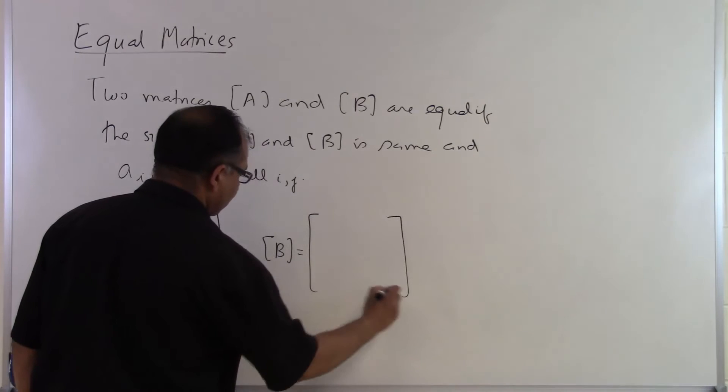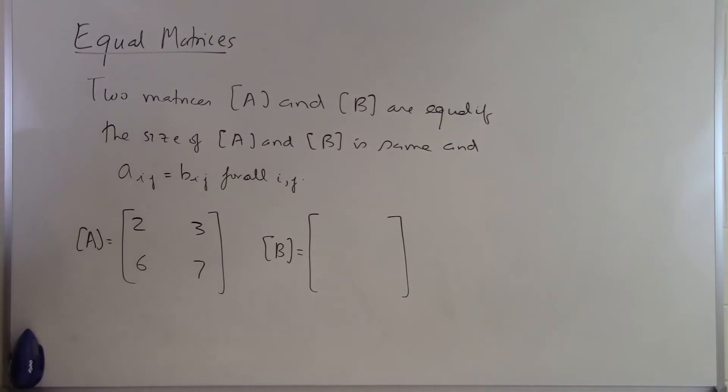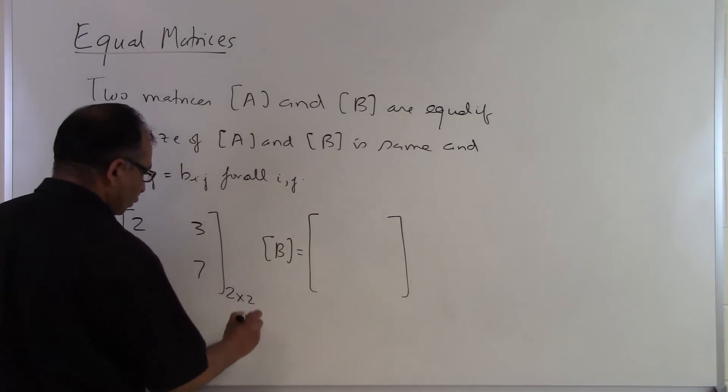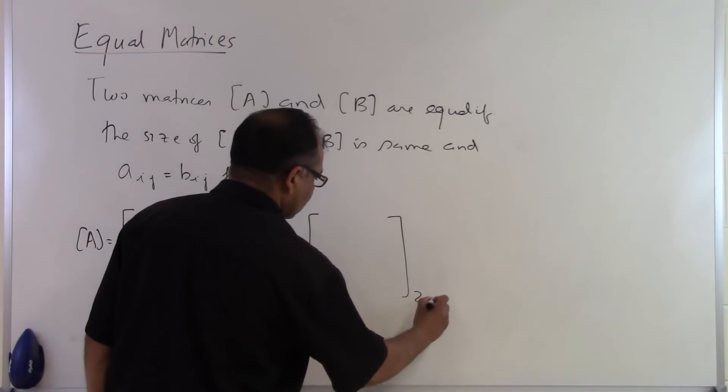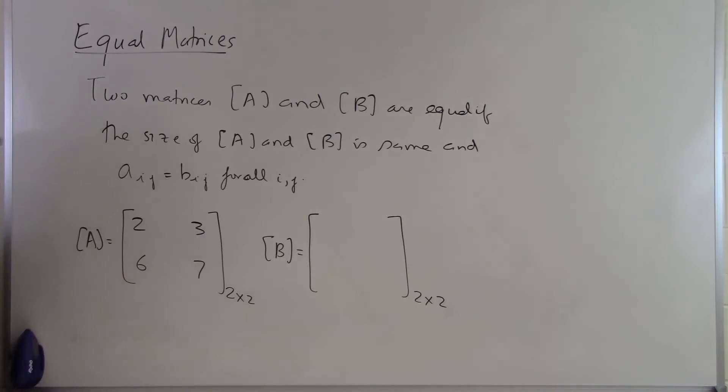What will make this matrix to be same as this matrix? The first thing which we have to realize is this is two rows two columns and B also has to be two rows two columns. So the order has to be the same.